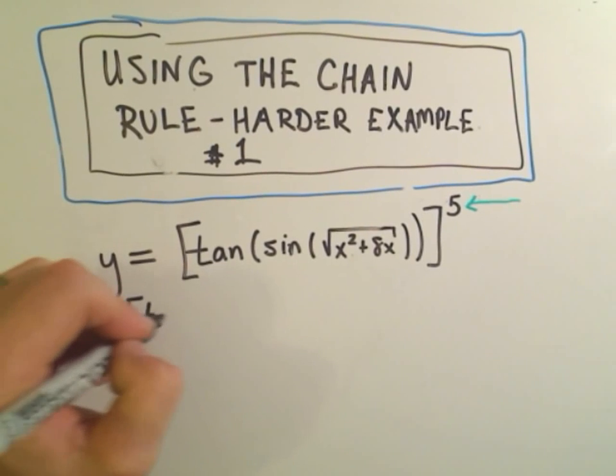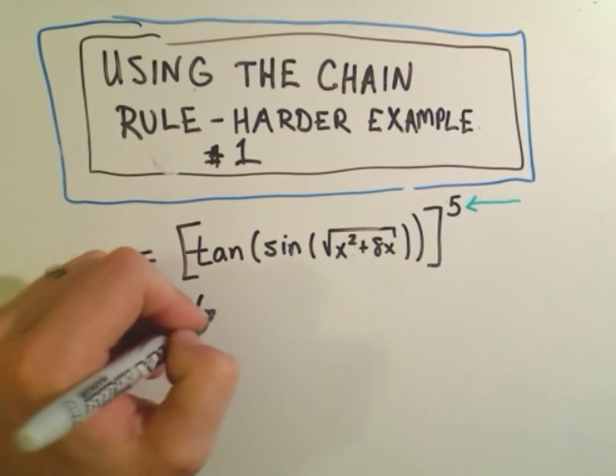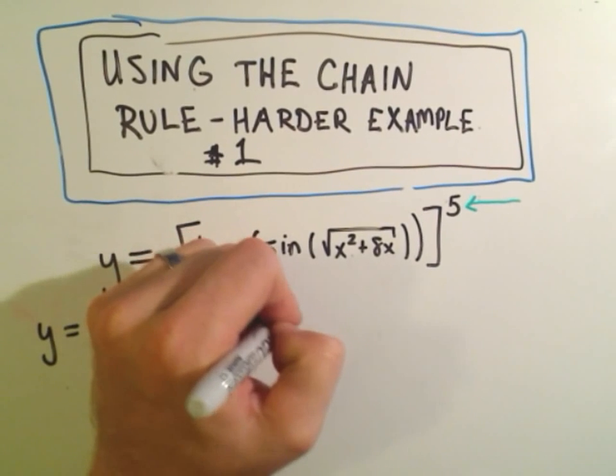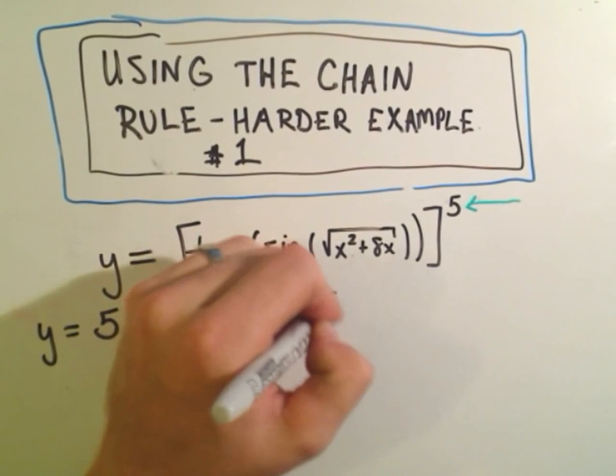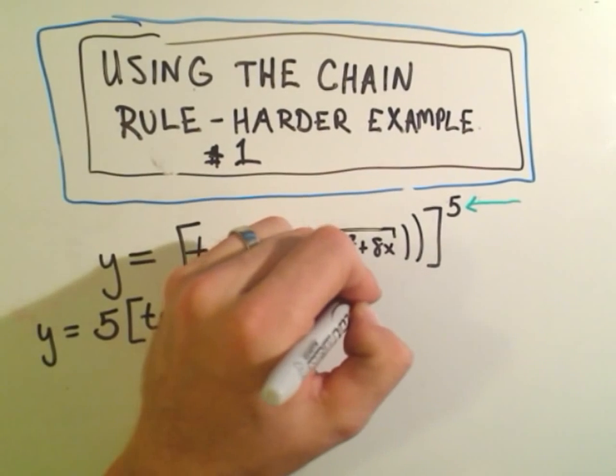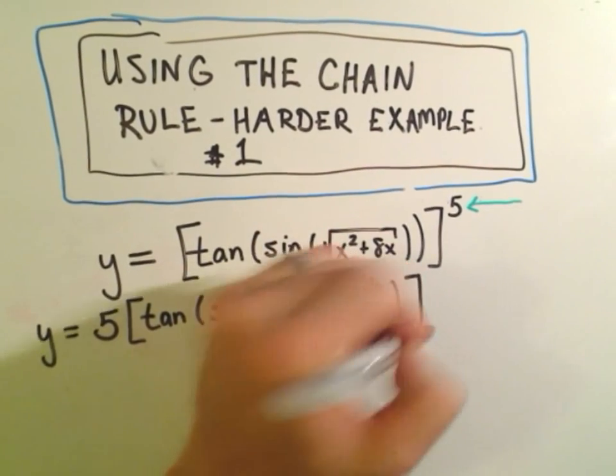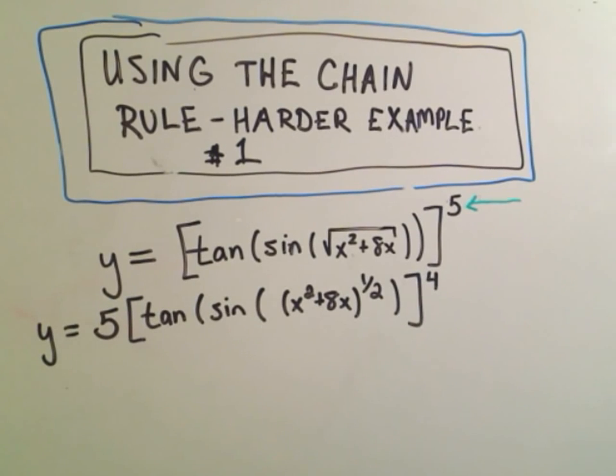Then you leave everything on the inside alone, tangent of sine of, and I'm going to go ahead and rewrite this as x squared plus 8x to the one-half power. That'll all now be raised to the fourth power.